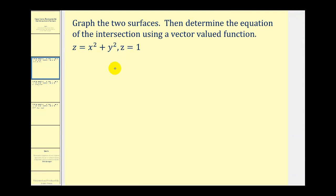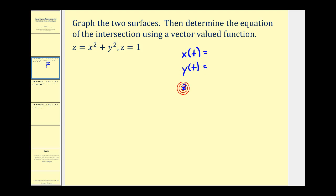What we're going to do is find a solution to this system using a set of parametric equations, and then once we have the parametric equations, we're going to rewrite it as a vector-valued function. Since the intersection is a space curve, in parametric form we're going to have to have an equation for x of t, y of t, and z of t. We want these three equations to satisfy both of these equations.